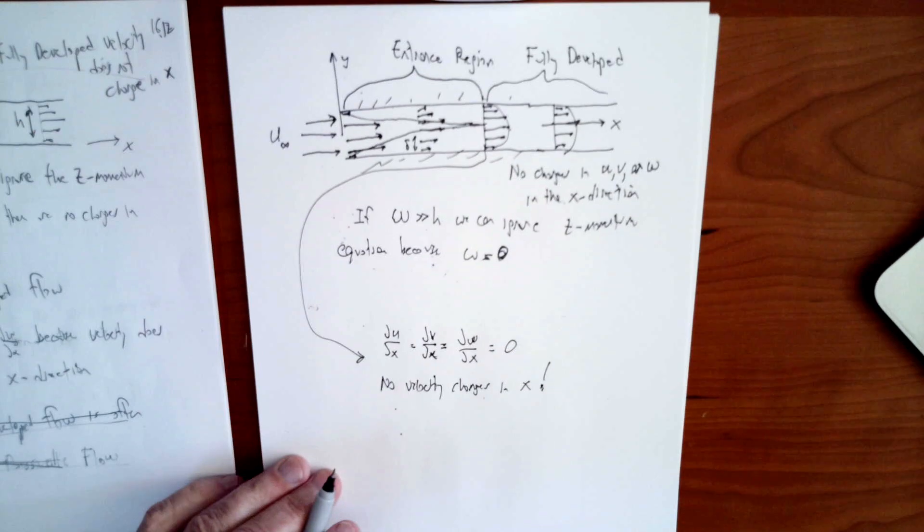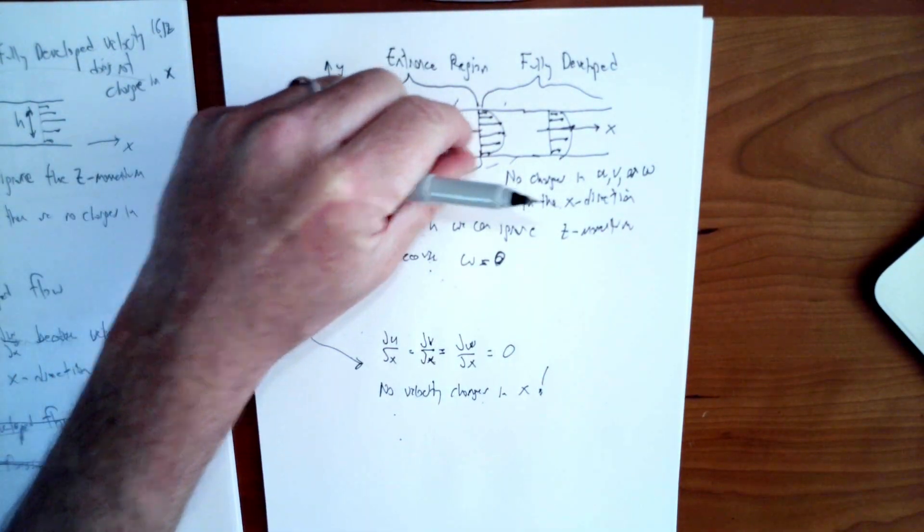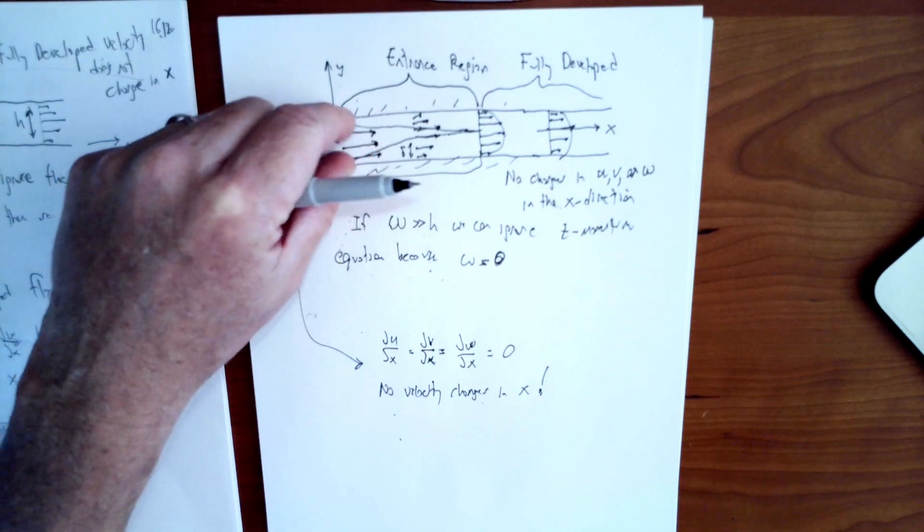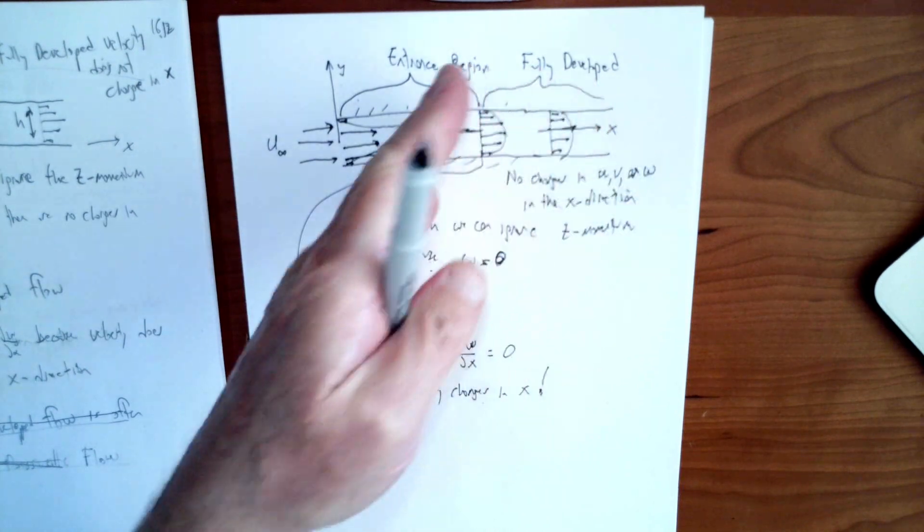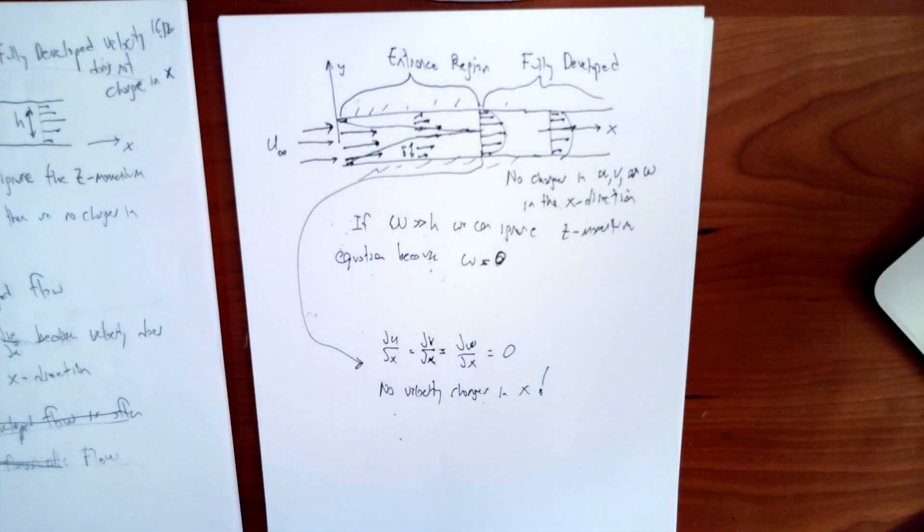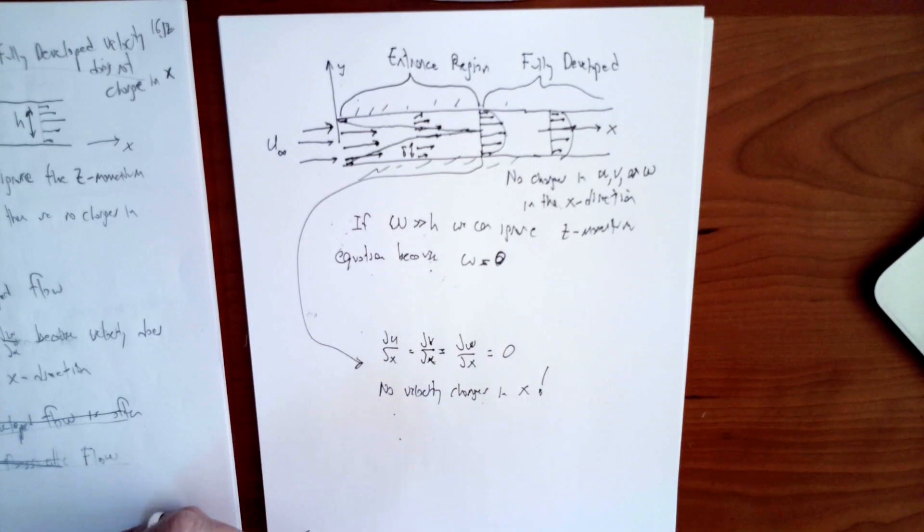So that's the key. Two regions: an entrance region where the flow is changing its profile, going from a uniform profile to a more parabolic profile, and then a fully developed region where the flow is no longer changing its velocity as it moves down the channel. It's keeping the same velocity all the way through to the end.